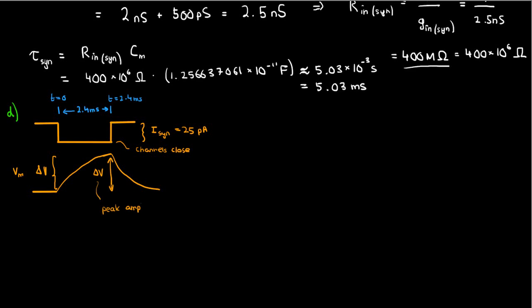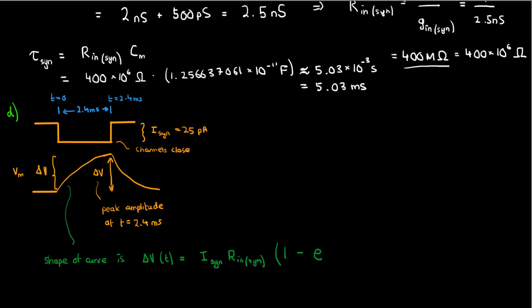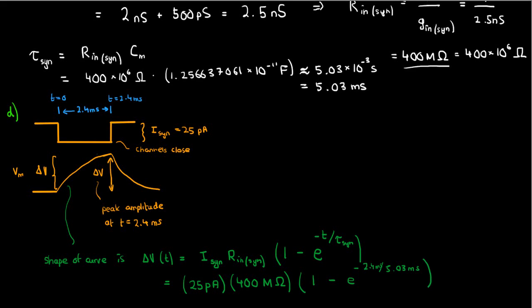To find this peak amplitude, you use a voltage equation where delta V of T equals I synaptic times the input resistance when the synaptic channels are open, times (1 minus the exponential of negative T over the time constant). R in sin is the input resistance while the synaptic channels are open, and tau sin is the time constant while they're open. Plugging in: synaptic current is 25 picoamps, input resistance is 400 megaohms, time constant is 5.03 milliseconds, and T is 2.4 milliseconds. You get approximately 3.79 millivolts.